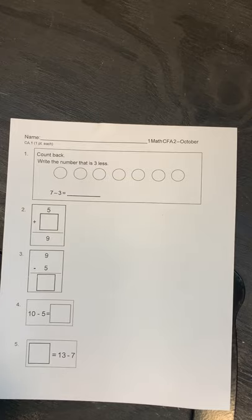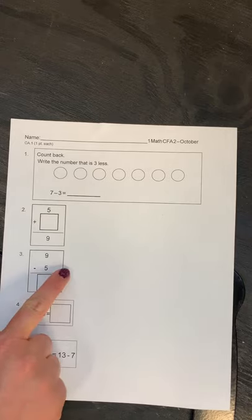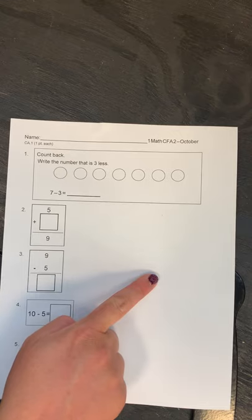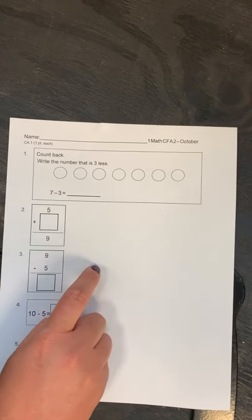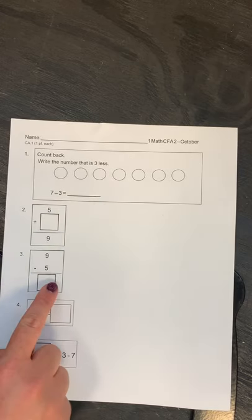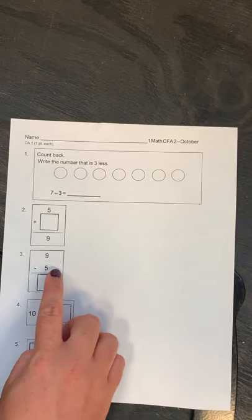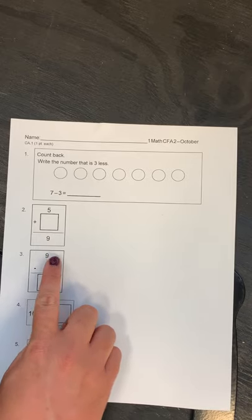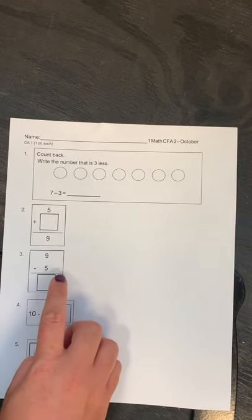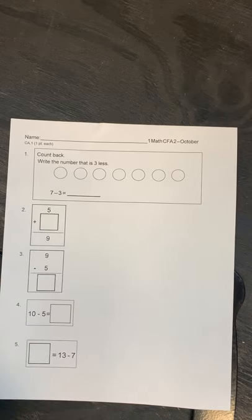Number three. I see the same numbers again, except this time they're in a different order. So again, if you want to draw a picture out here and then show your subtraction, you are welcome to do that like we did for number one. Or if you want to use your fingers to count back, you can do that too. But we're going to start at nine and we're going to take away five. So nine take away five is what? Write your answer in the blank for number three.